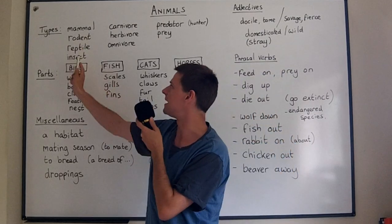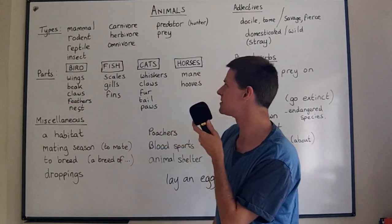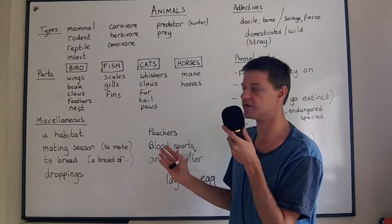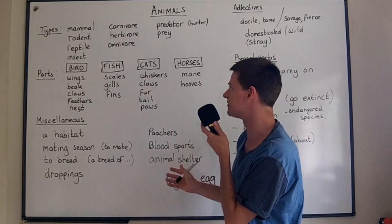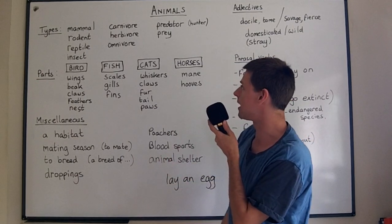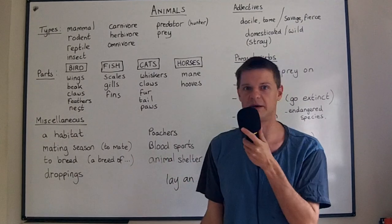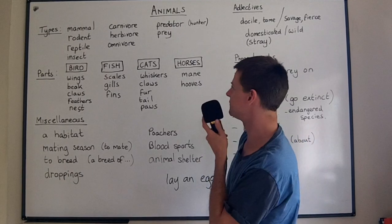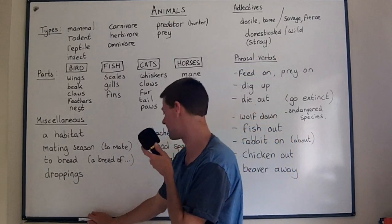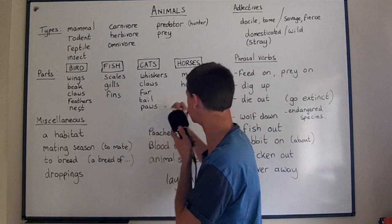Reptiles are not mammals. Reptiles are things like crocodiles, snakes, and lizards. They're cold-blooded, I believe, whereas we would call mammals warm-blooded.